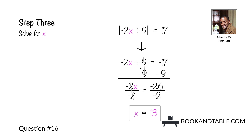Solve for x: remove the constant positive 9 by subtracting 9 from both sides, leaving negative 2x is equal to negative 17 minus 9, which is negative 26. Then remove the coefficient negative 2 by dividing both sides by negative 2, leaving you with x is equal to 13. So x is equal to 13 is one answer.